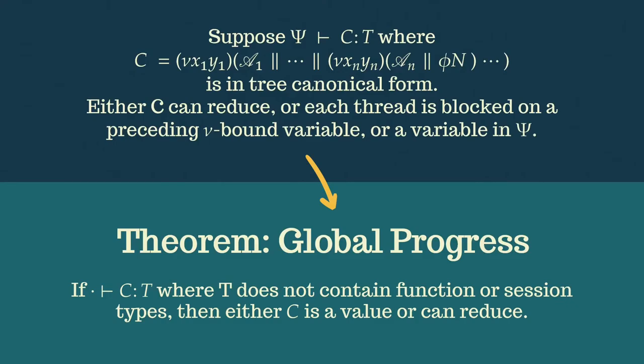We can also write every open HGV configuration as a collection of independent configurations in tree-canonical form. So if we restrict typing environments to only containing session types, we can show that configuration in tree-canonical form can either reduce or each thread is blocked either on a preceding new bound variable or a variable in the typing environment. If we consider closed configurations where the main thread has a type which does not contain function or session types, then we know that either the configuration has reduced all the way to a value or it can reduce further. We also get determinism and termination, but the proofs for these are entirely unchanged.